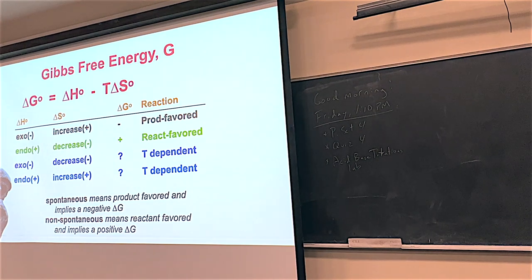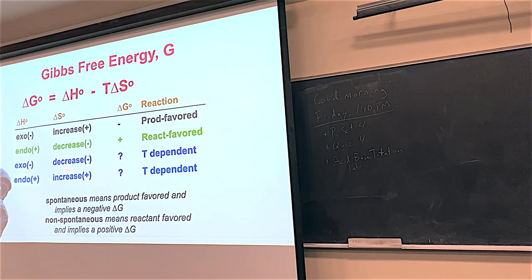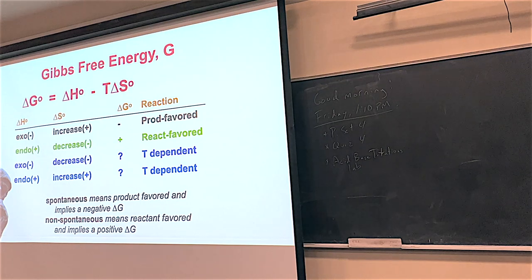If you have positive delta H (endothermic) and positive delta S, entropy wants the reaction to go but enthalpy doesn't. At higher temperatures, the delta S term begins to overpower delta H, and the delta G becomes negative — reaction goes. So you can see how temperature is important to chemists: sometimes everything is perfect at all temperatures, but often you have to play with temperature to make the reaction actually work for you.